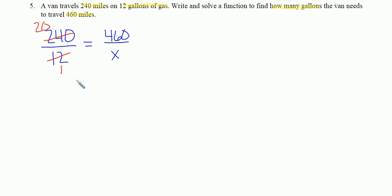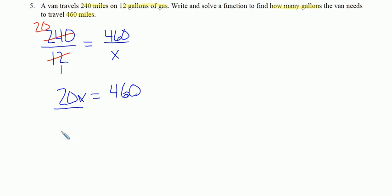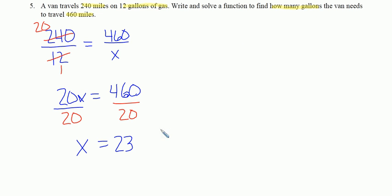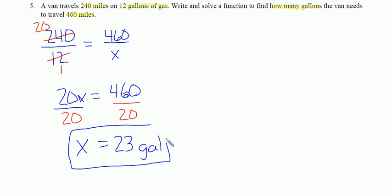Now let's cross-multiply: 20 times x is 20x, equal to 1 times 460, which is 460. Then we divide by 20 on both sides — the 20s reduce out — and we get x equals 23. The van needs 23 gallons to travel 460 miles. When the question uses units like miles and gallons and asks for how many gallons, make sure you give units in your answer.